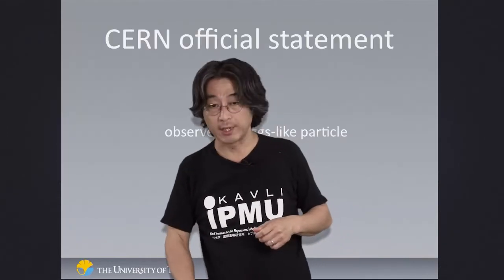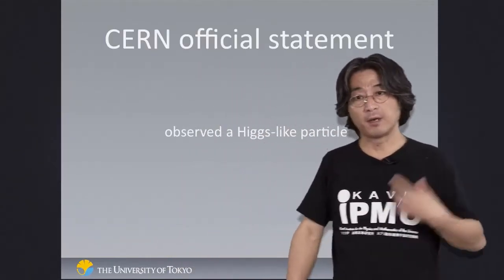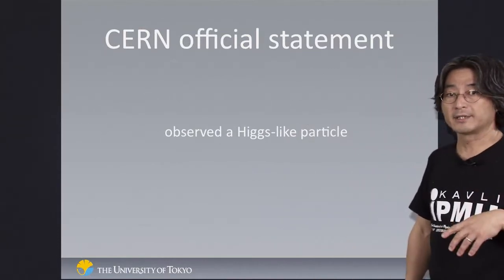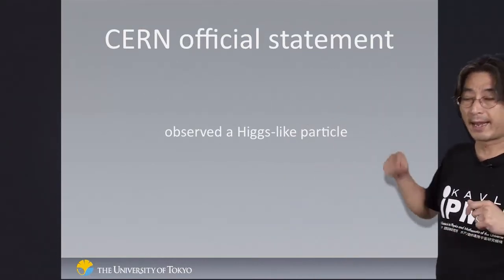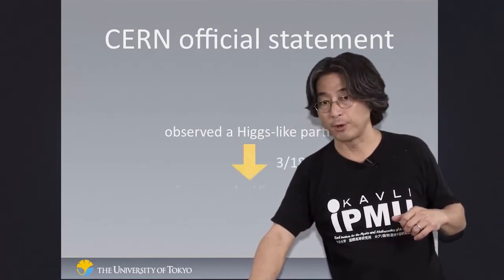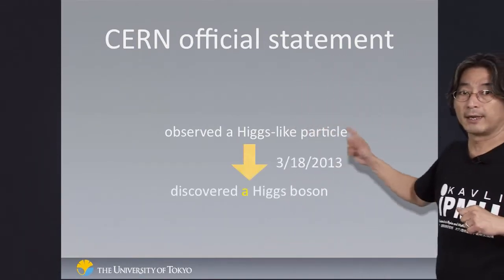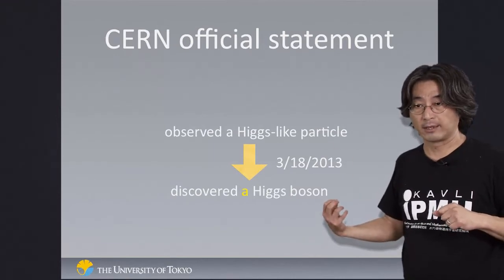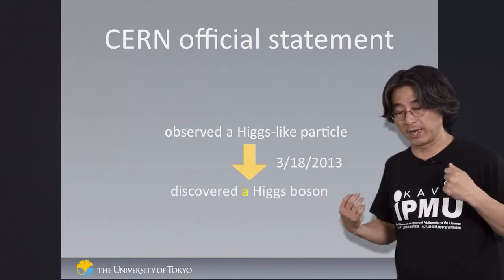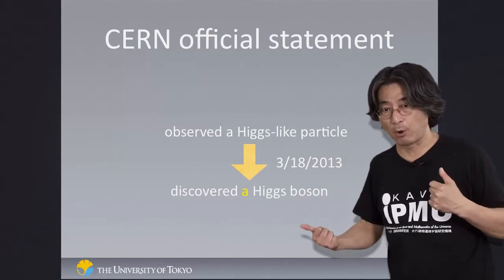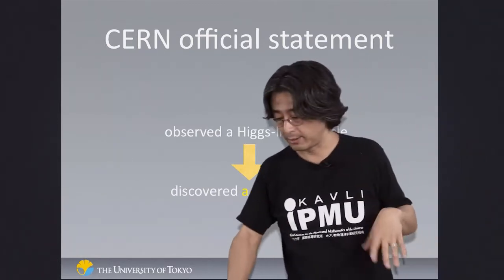CERN actually kept doing this experiment further beyond July 4th of last year. There is now a statement that has changed from observing a 'Higgs-like particle' to a discovery of a Higgs boson. We would still like to understand whether what we have discovered is really the Higgs boson — we are not quite there yet.